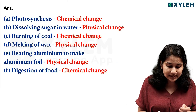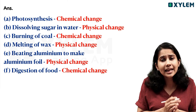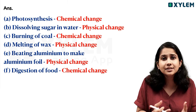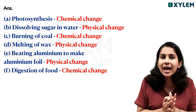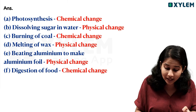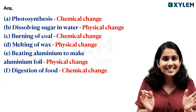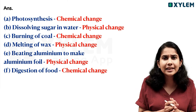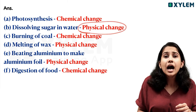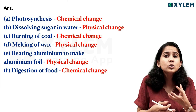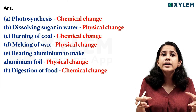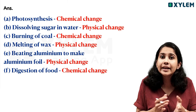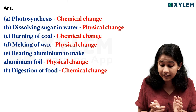Photosynthesis is a chemical change because a new substance is formed. Dissolving sugar in water — it's just dissolved. No new substance is formed; it's a physical change. We just mix water and sugar, and we can separate them again through physical processes.